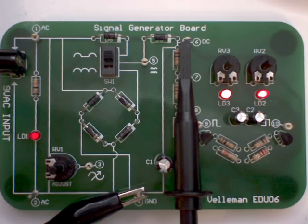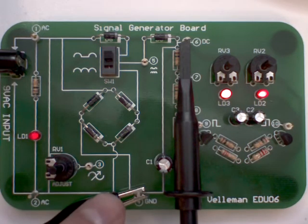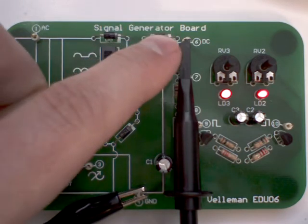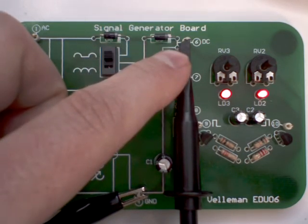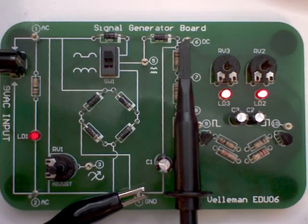Connect the board as shown, so the alligator clip goes to the ground and the probe tip goes to test point 6, that is our DC output of our board. Also make sure that you flip the switch in the upright position, that is single phase rectification.